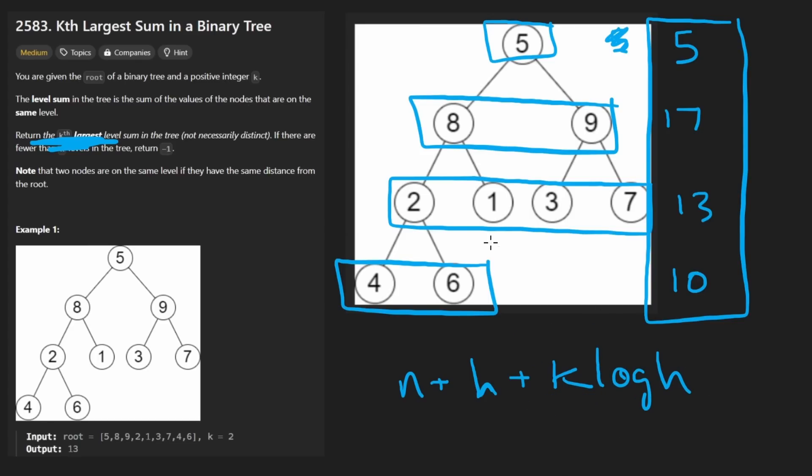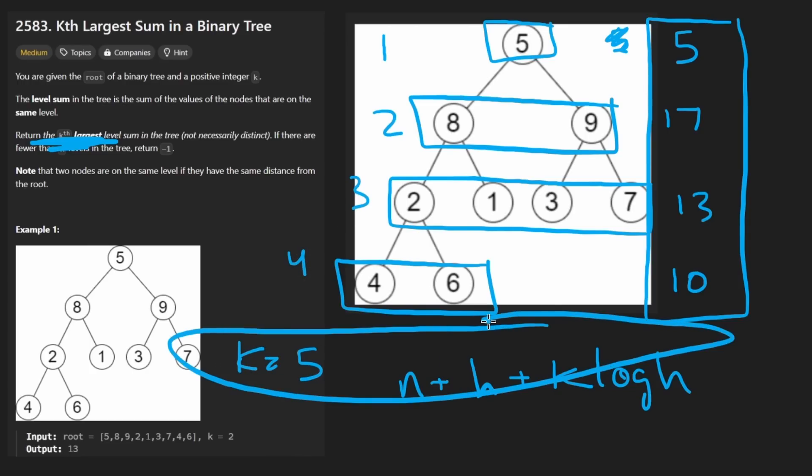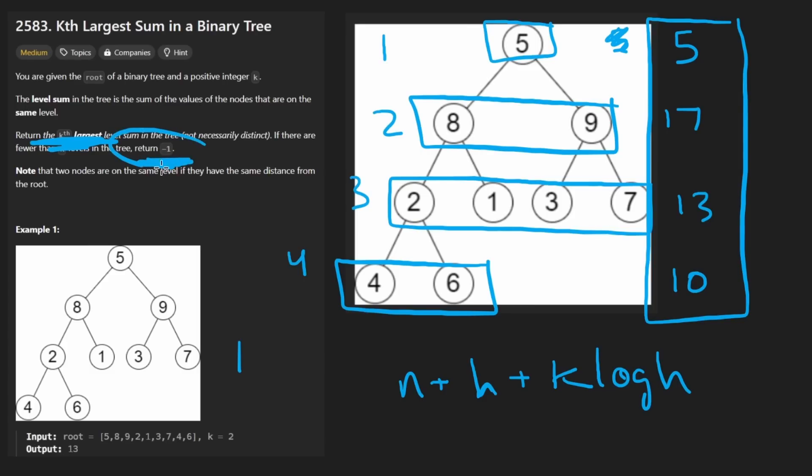Now, one thing I probably should have mentioned earlier is the fact that we might not actually have k levels in the tree. For example, in this tree, this is level 1, 2, 3, 4. If we have k equals 5, well, then we don't have a fifth level. And in that case, we return a default value of negative one. So that's pretty easy to handle, which is why I wasn't really too focused on that.